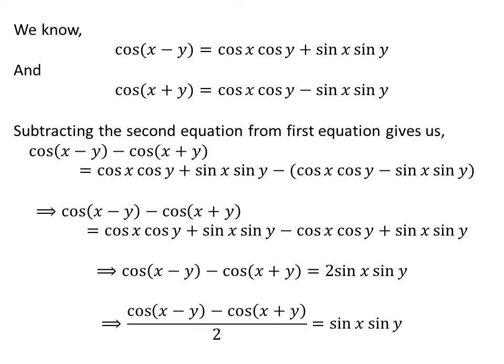Taking the factor 2 to the left of the equation gives us half of cosine of x minus y minus cosine of x plus y is equal to sine of x times sine of y. Thus, we have proved the trigonometric identity.